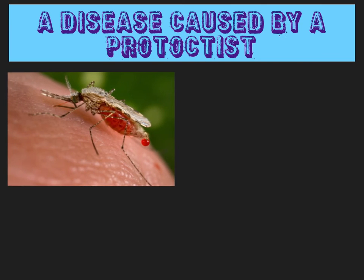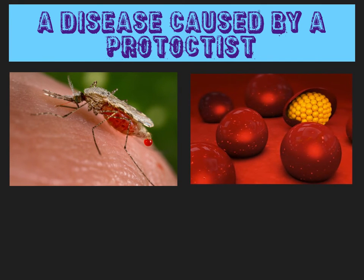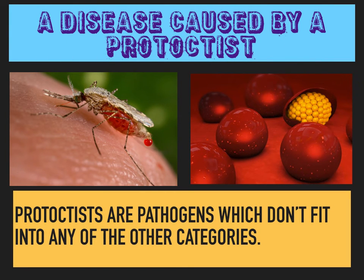Now for a disease caused by the fourth type of pathogen — a protoctist. This one is malaria, and it's caused by a protoctist called plasmodium. You get plasmodium from a mosquito bite — in its saliva the plasmodium gets into your bloodstream and can then be passed onto another mosquito, helping to spread the disease if you get bitten by a second insect. Once inside your bloodstream, the plasmodium is able to go inside red blood cells where it makes lots of copies of itself and causes damage. Protoctists are quite a large group — they're just any pathogen which doesn't fit into any of the other categories you have to learn about.